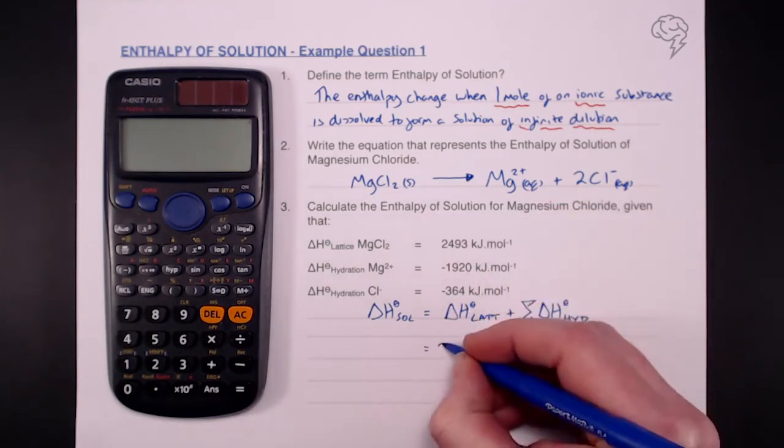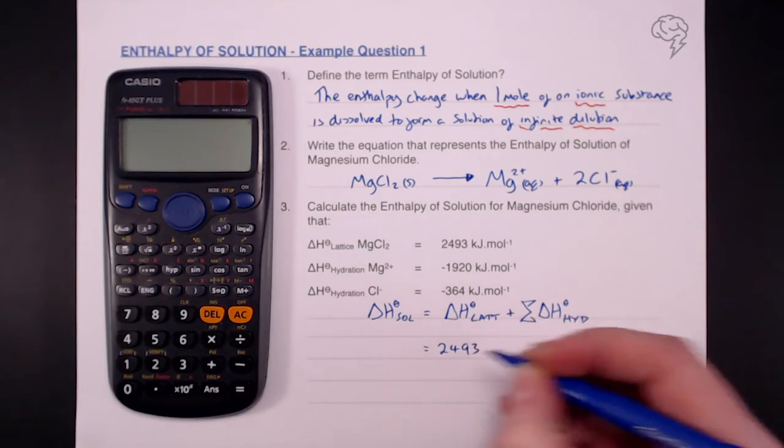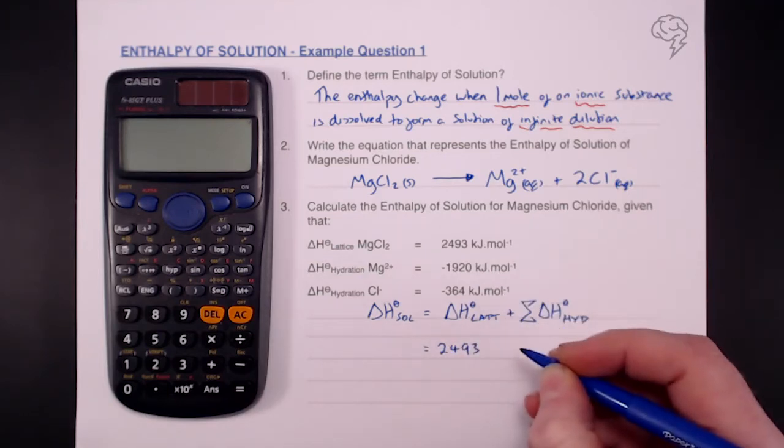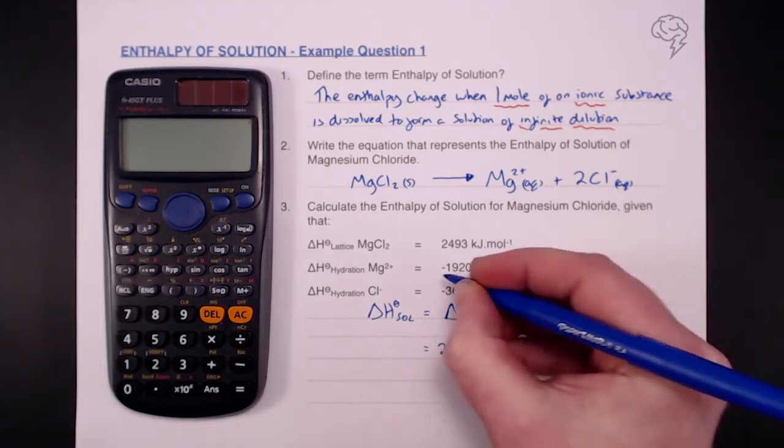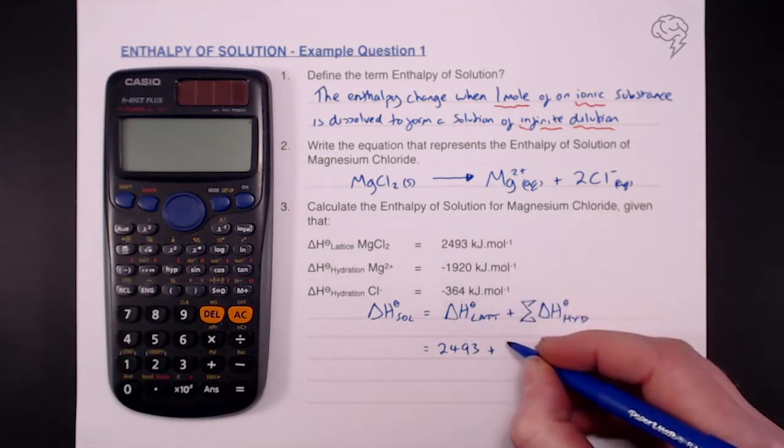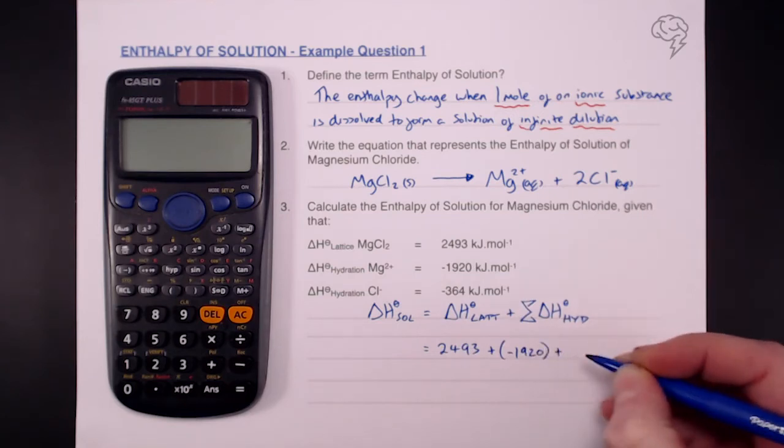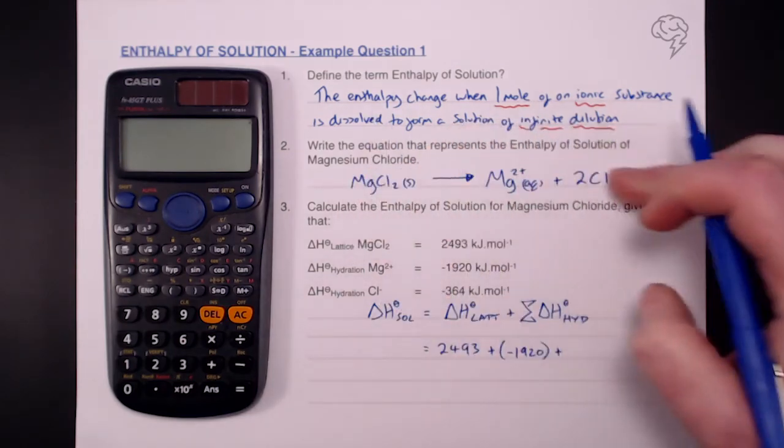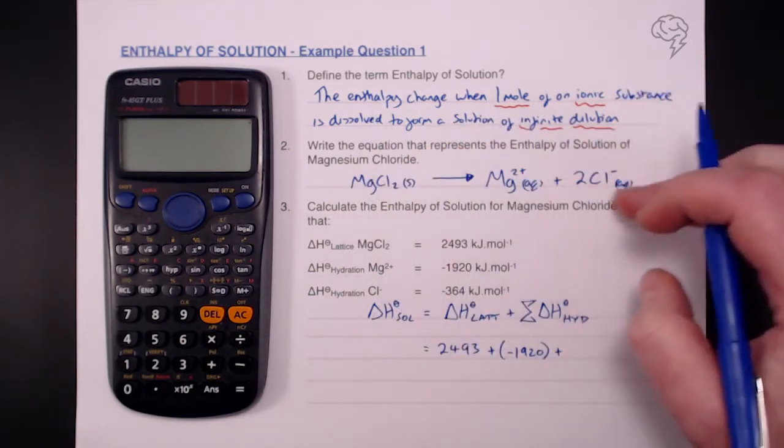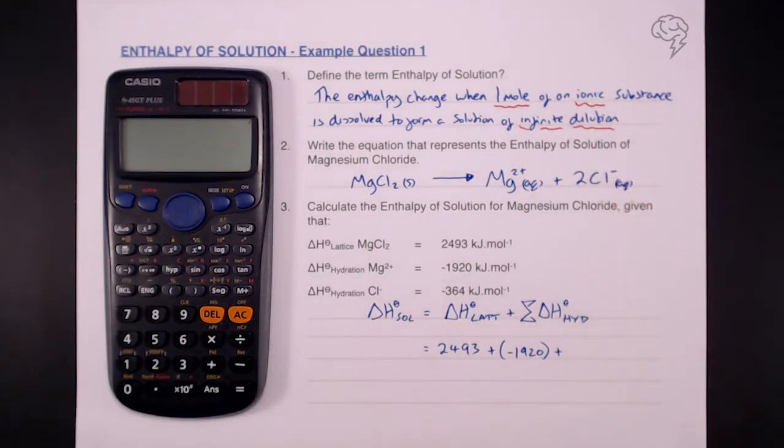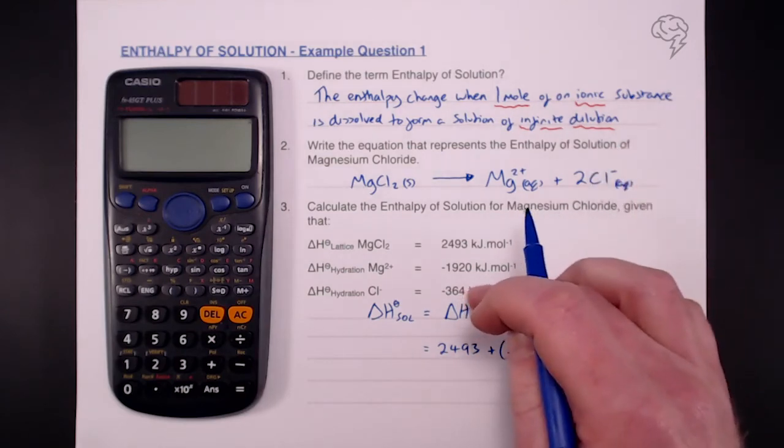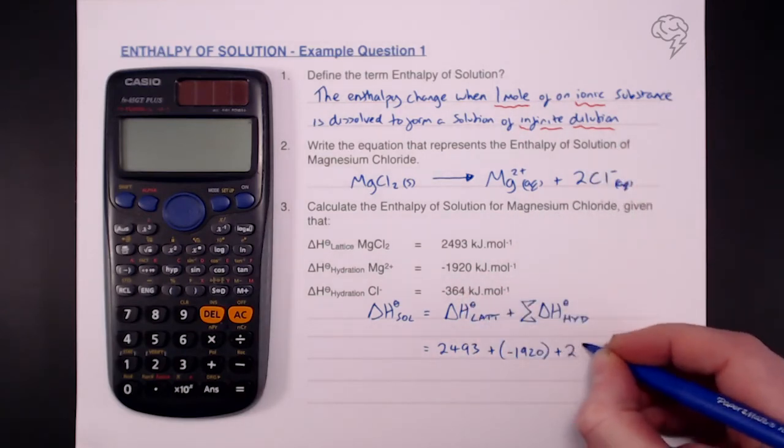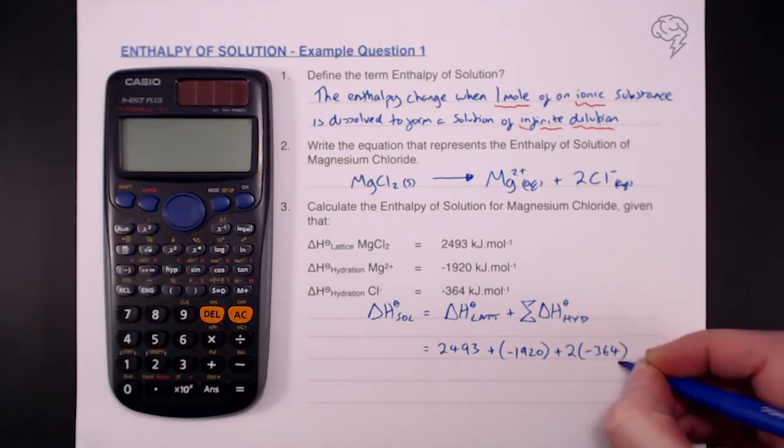So we've got our 2493, which is a positive value there for our lattice breaking. We're then going to add our hydration of magnesium ions, which is plus minus 1920. And then we're going to add minus 364. But be careful, they've asked you to write this equation purposefully because we are actually dealing with two moles of chloride ions because our formula is MgCl2. So we need to double this value here for chlorine, so it's plus two times minus 364.